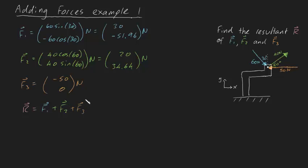And if you were to add up all of these, we simply add up their i and j components respectively. So it's going to be 30 plus 20 minus 50, and then we add the j components. So it's going to be minus 51.96 plus 34.64 and then plus 0, and that's newtons. And if you evaluate this into your calculator, you'll be left with, amazingly, 0 and minus 17.32 newtons.